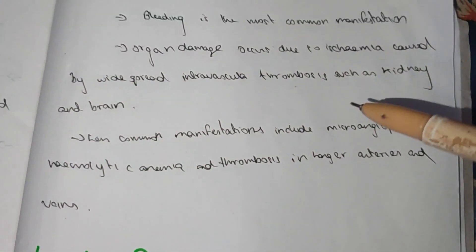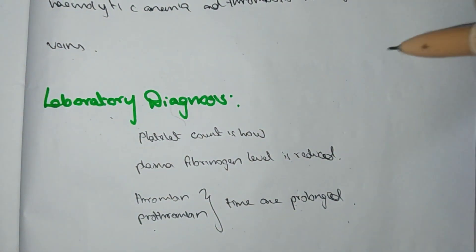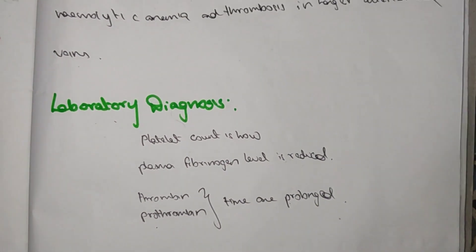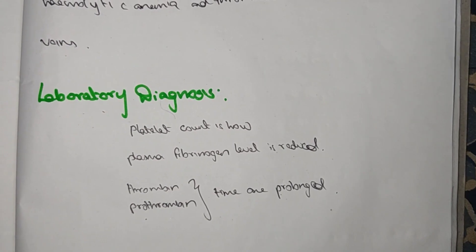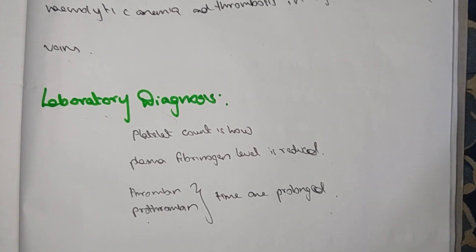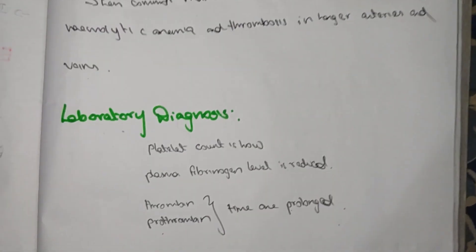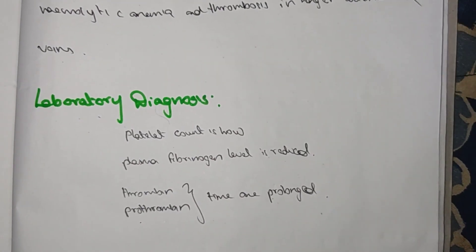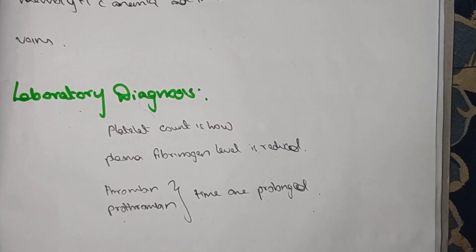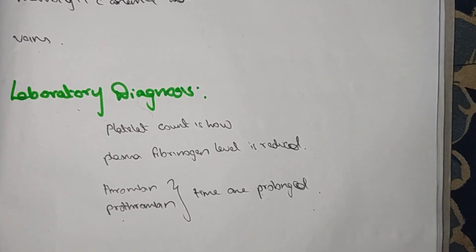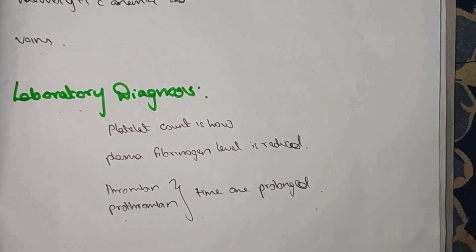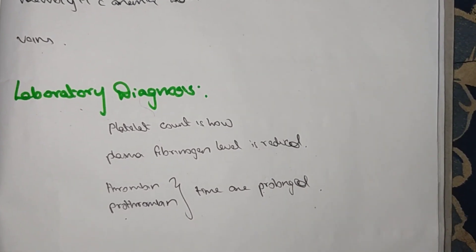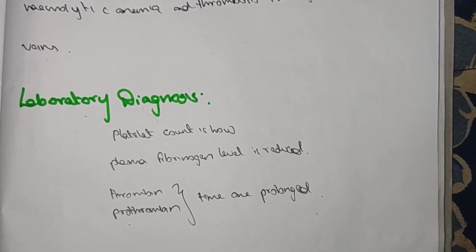The laboratory diagnosis includes: platelet count is low, plasma fibrinogen level is low, and both thrombin time and prothrombin time are prolonged. The treatment of disseminated intravascular coagulation is blood transfusion. Thank you. If you like this video please like, share, and subscribe to my YouTube channel.